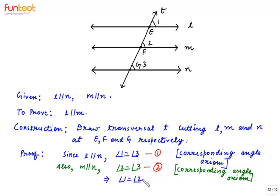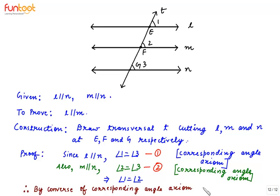Now we will apply the converse of the corresponding angle axiom, according to which if corresponding angles are equal then the lines are parallel. We can see that angles 1 and 2 are the corresponding angles for lines L and M. So by the converse of the corresponding angle axiom, line L is parallel to line M — and this is what we had to prove.